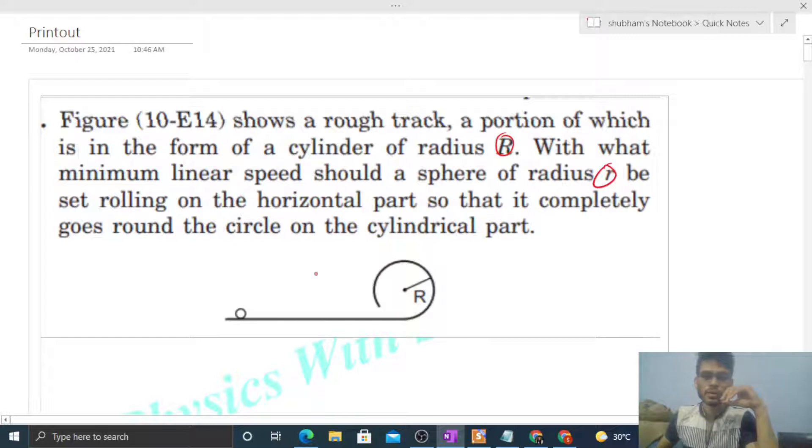So this way we have a sphere of radius small r and we give it a little velocity v to the center so that it starts rolling on this track. First, on the horizontal track it will roll. When it moves on the horizontal part, its velocity will be constant for the sphere.